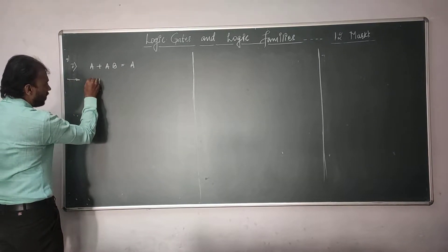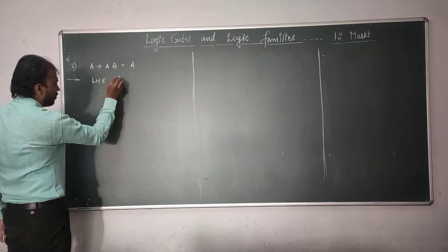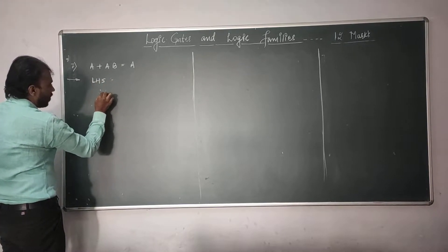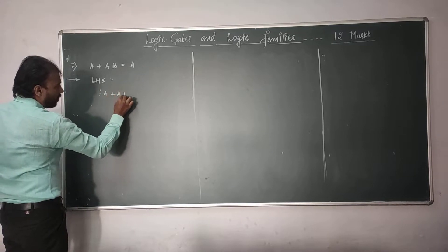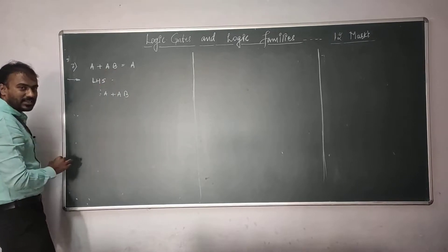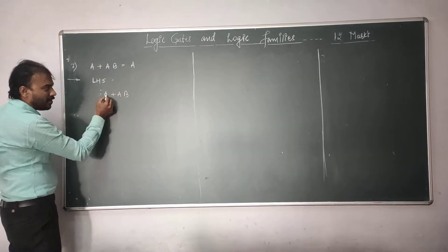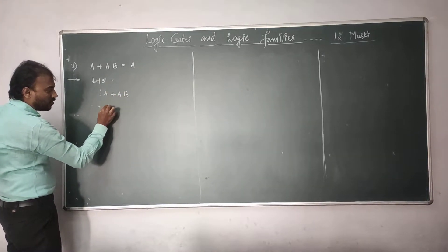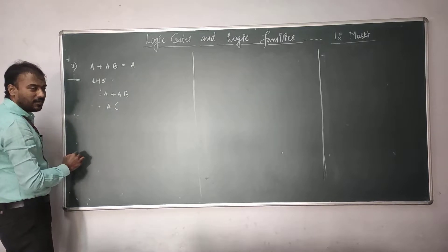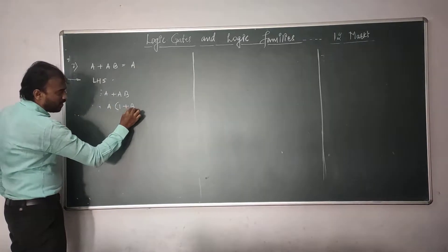I will begin with the left hand side equation: A plus AB. What is common between these two terms? The common factor is A. What is left in the bracket then? 1 plus B.